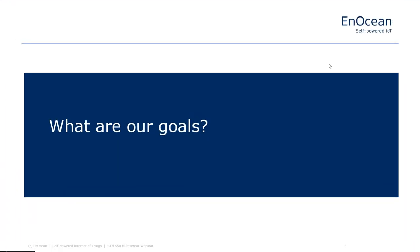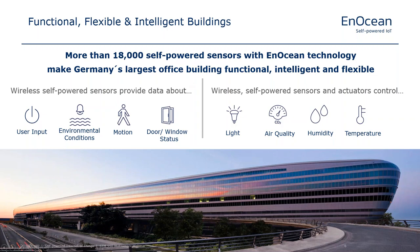Before discussing the features, let's look at what goals we want to achieve with our multi-sensor and what problems we'd like to solve. We aim for functional, flexible, and intelligent buildings. Functional buildings provide all the base functionality you expect — controlling light levels, temperature, humidity, and shutters — all using wireless data for maximum flexibility. Additionally, we want to make buildings not only functional but also intelligent.